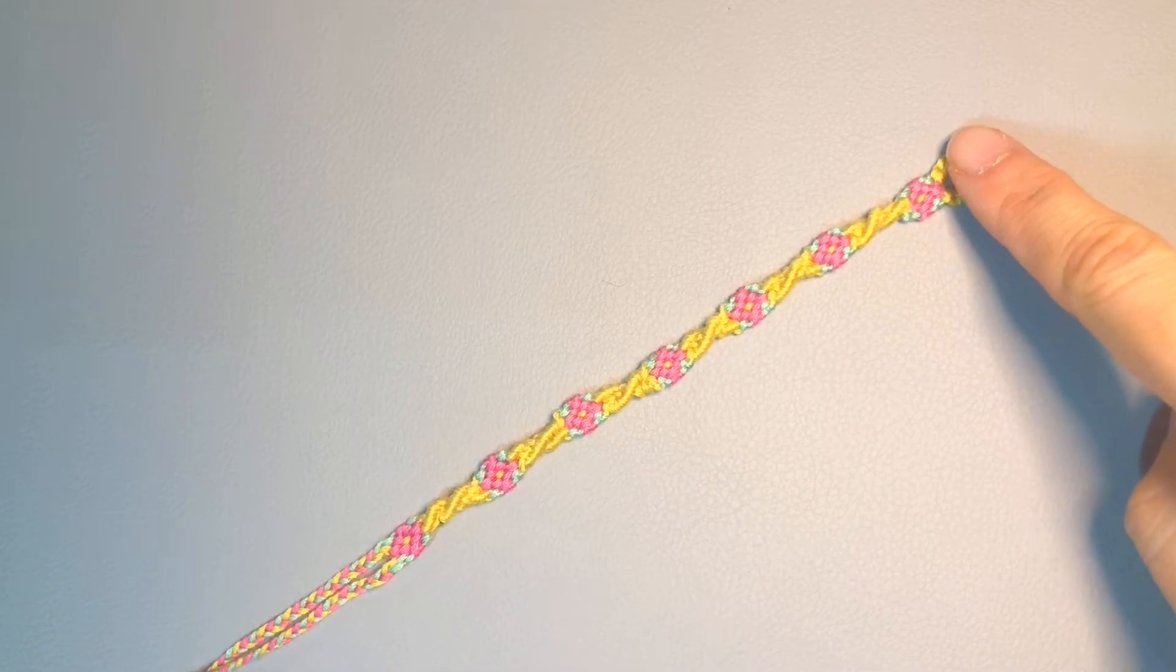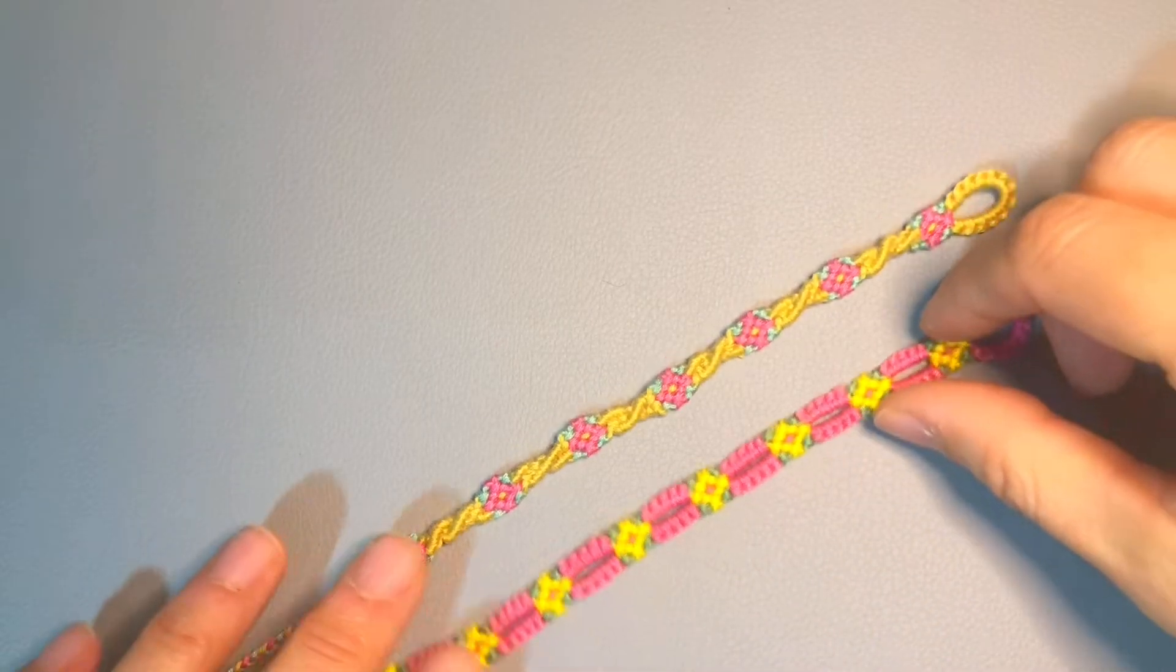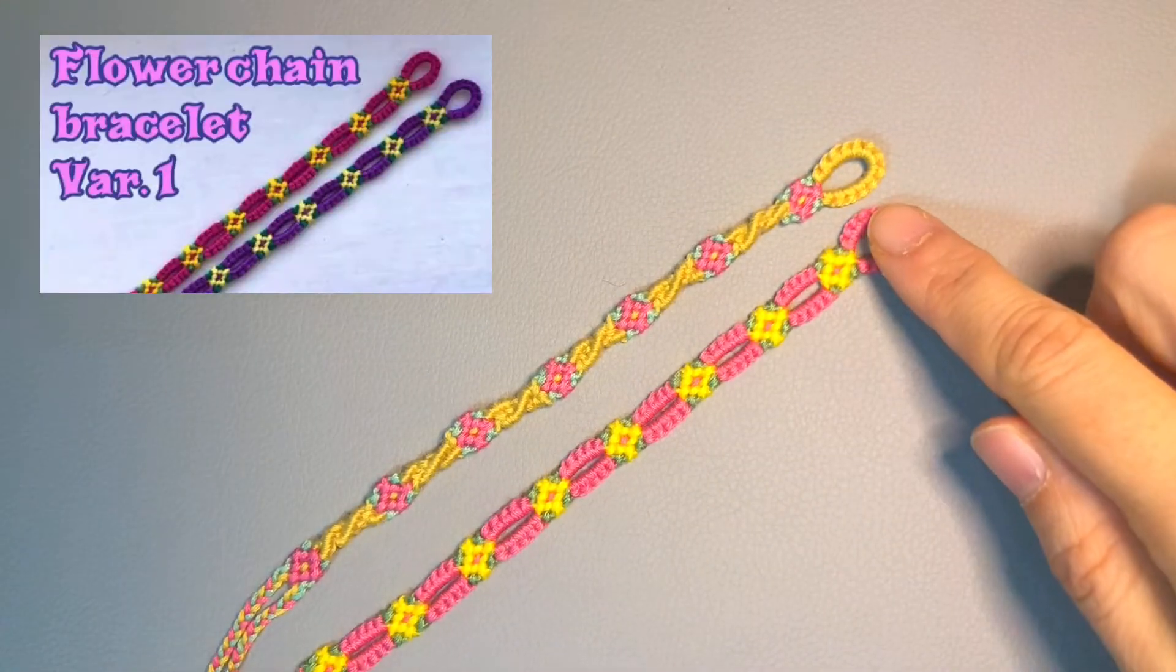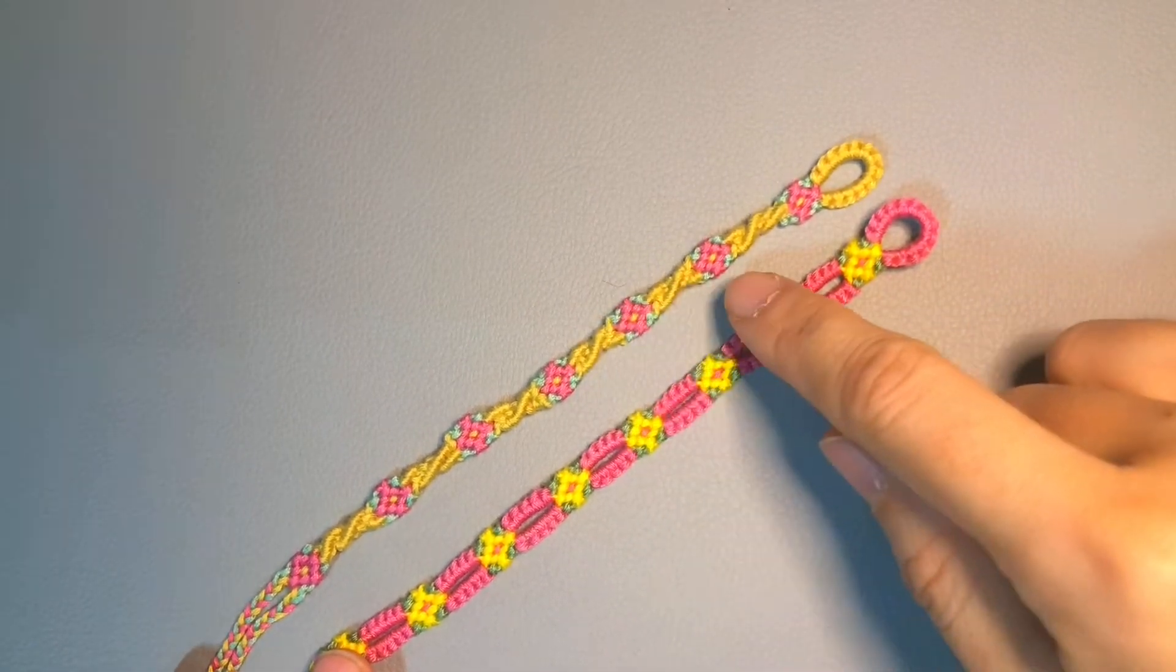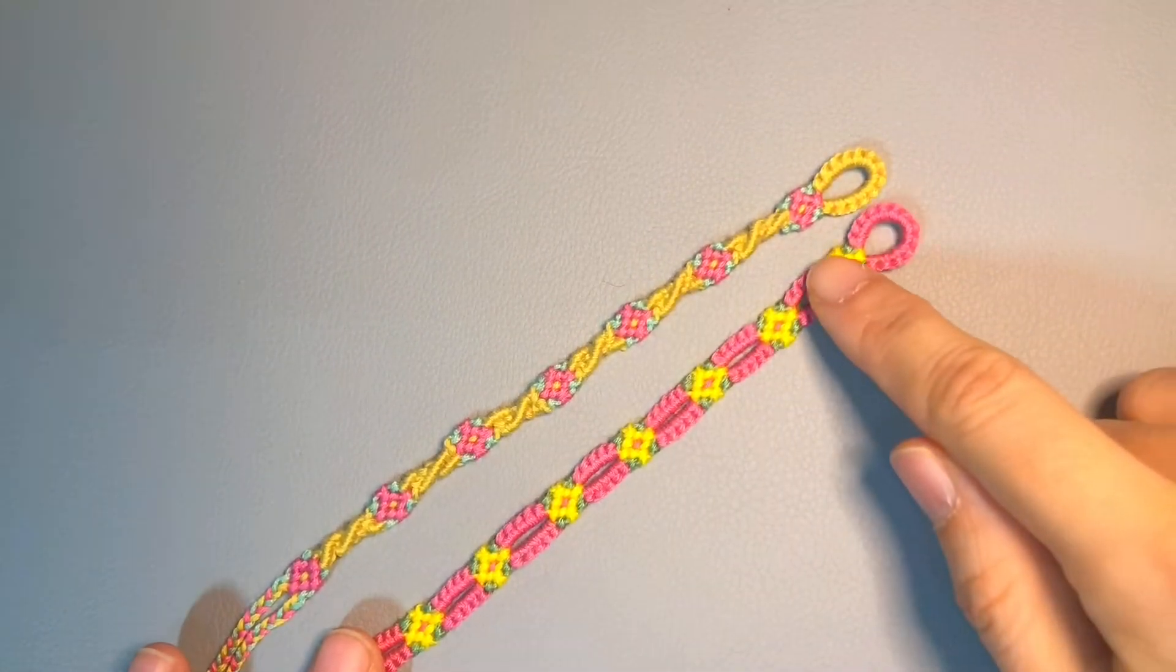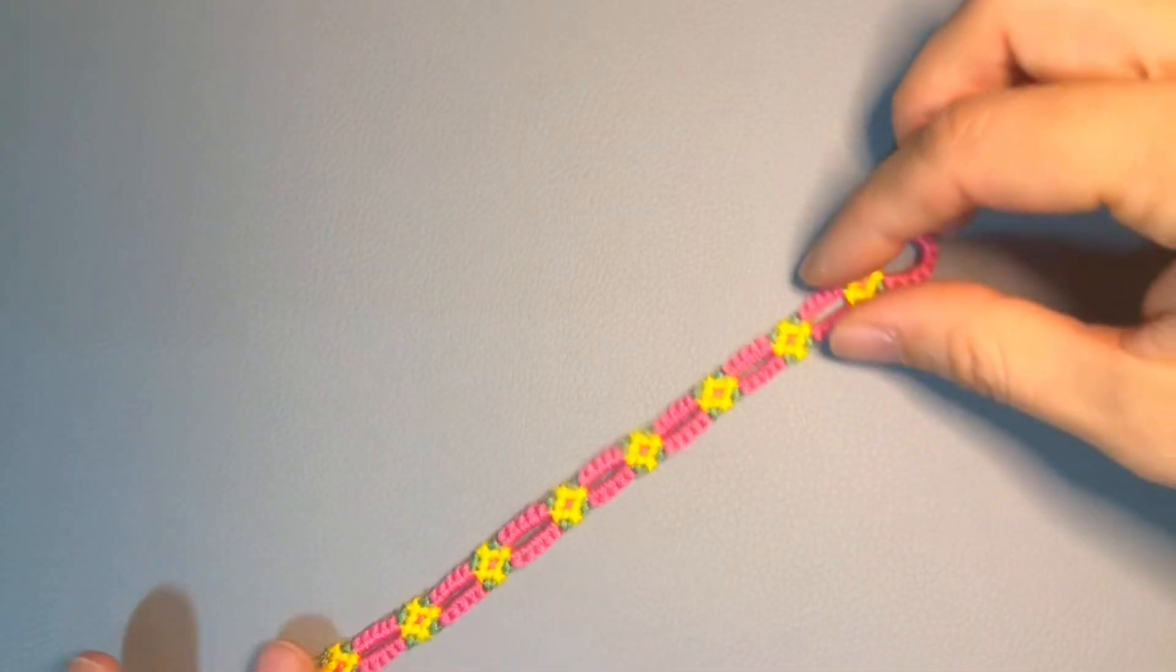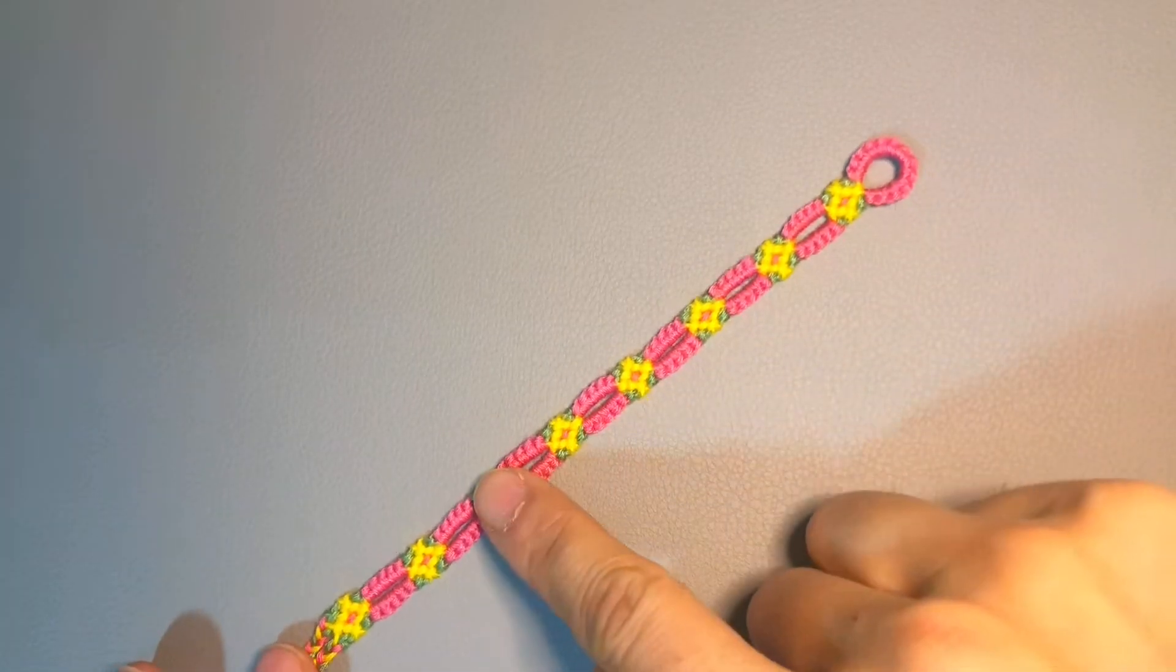I call this the second variation of the flower chain bracelet because it has the same flower part and loop part as the one I made the tutorial for just yesterday. The only difference is this spiral ivy part which is between the flowers.